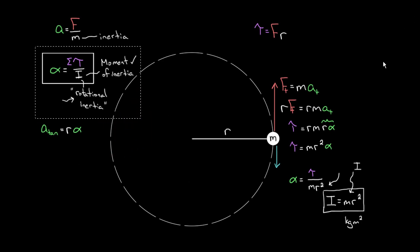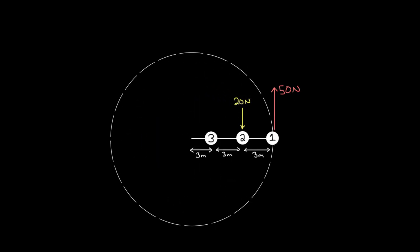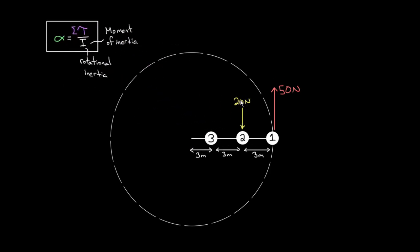Let's take this formula and apply it to a harder problem. Say you have three masses: a 20 Newton force downward on mass two and a 50 Newton force upward on mass one, all separated by three meters, rotating in a circle. The question is: what's the angular acceleration? Using the rotational Newton's second law, alpha equals the net torque divided by the moment of inertia. There are two forces, so find the torque from each individually and add them up, just like you would with any net vector.